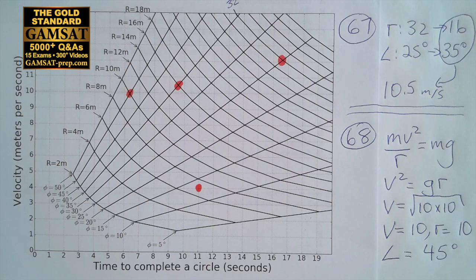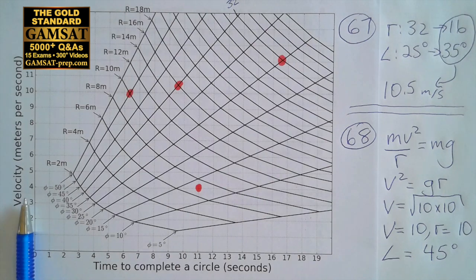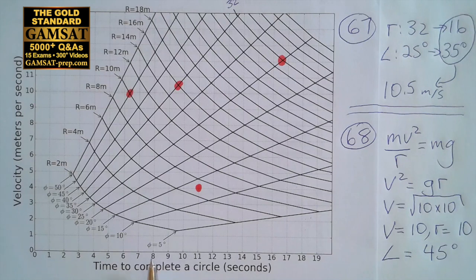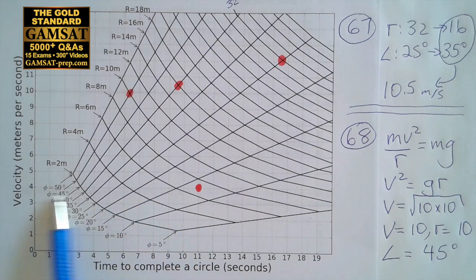In this particular passage, in the last paragraph it says for example, if the speed is 4 meters per second, and the time to complete one circle is 11 seconds, we look for 11 seconds and bring this up to 4 meters per second. So we have this point here.